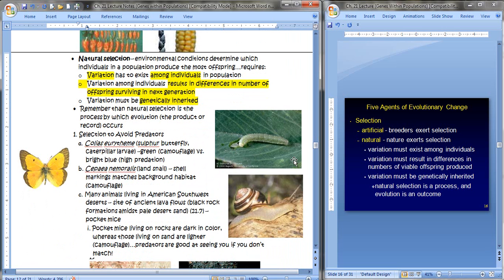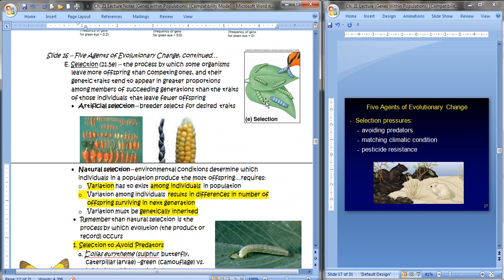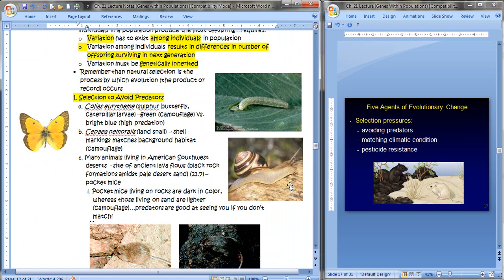Remember that natural selection is the process by which evolution occurs. Evolution is the product. Natural selection is the process. Let's look at some examples to show us some ideas about how natural selection works. There are three ways that we can see natural selection. One is the selection to avoid predators. Here, what we have is the sulfur butterfly's caterpillar larvae. You see the green camouflage, which of course would not be as easily detected as would be the blue counterpart. This is a diagram from that book, but the blue ones do exist, and of course they're picked off by predators more readily because they can see them.